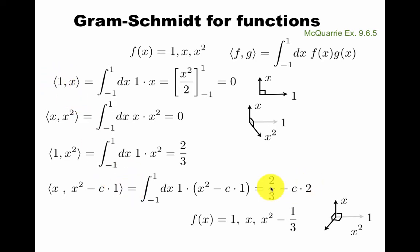You can fix that by subtracting some multiple of a lower function, 1. That multiple should be such that this vanishes. So this is the answer. These functions, if this is shifted like that, are orthogonal. Now try to relate this to the Legendre polynomial discussion earlier.